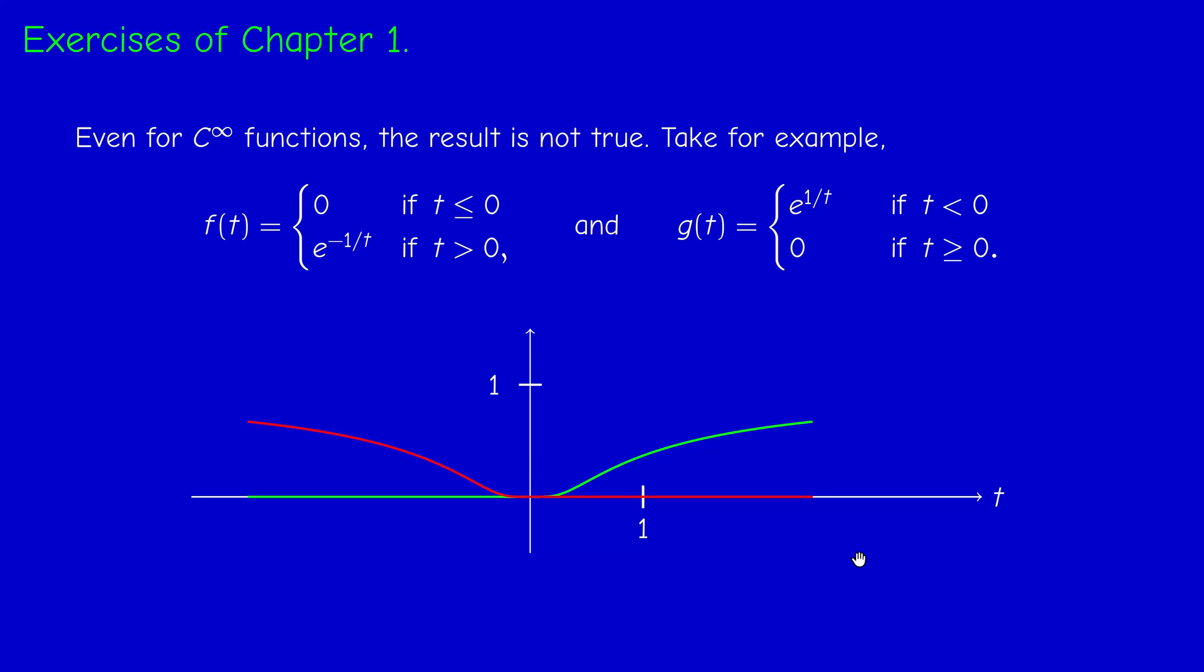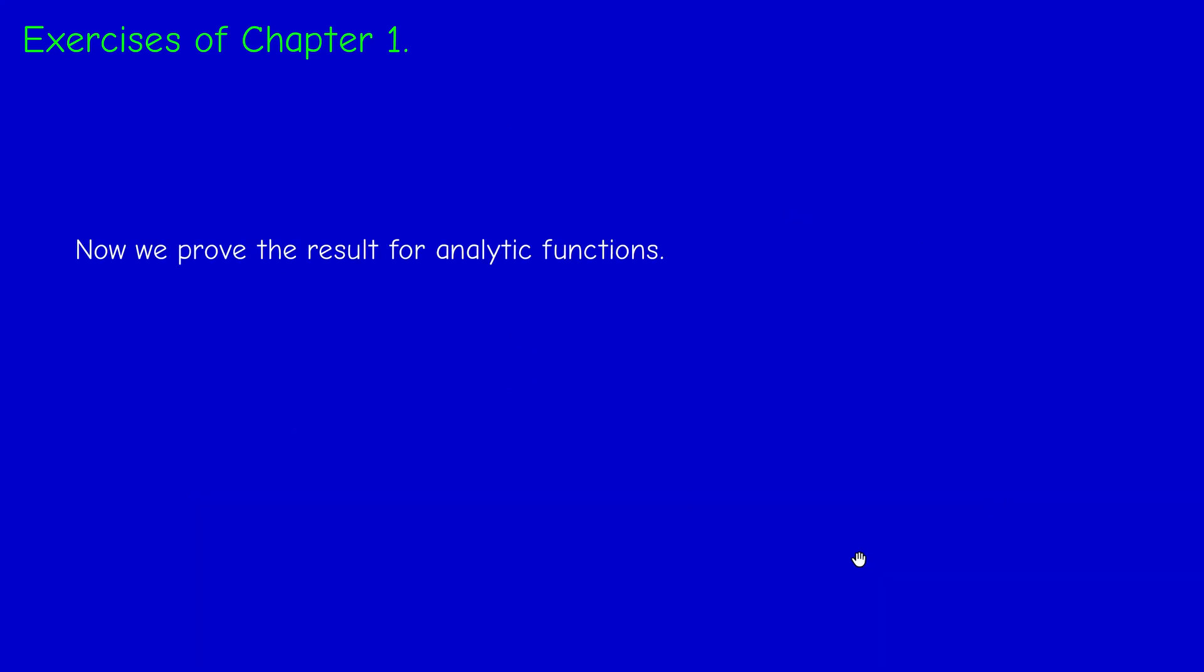Now, let us go back to the exercise, to the proof of the result. So suppose that the product of two analytic functions is zero, and suppose that F is not identically zero. We have to prove that G is identically zero, necessarily.